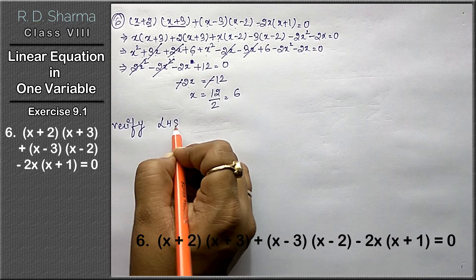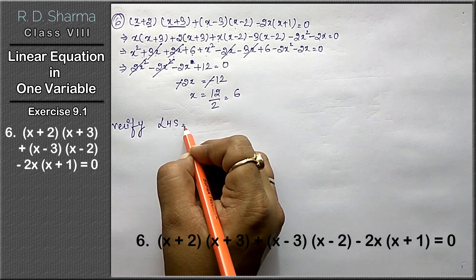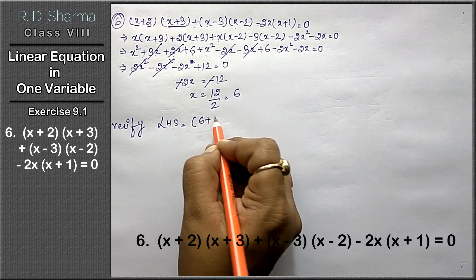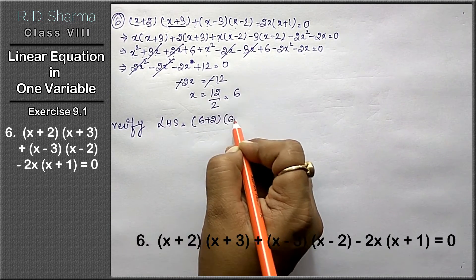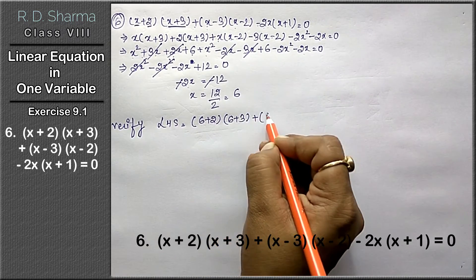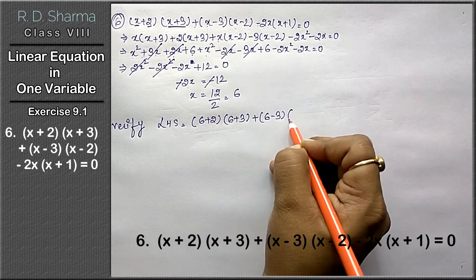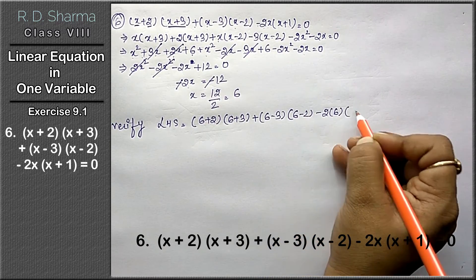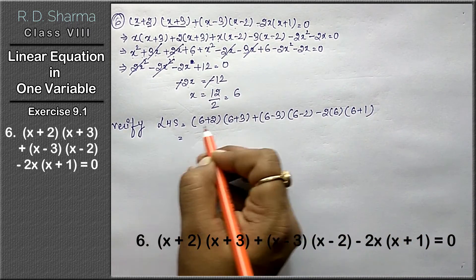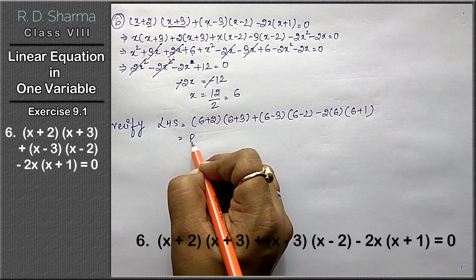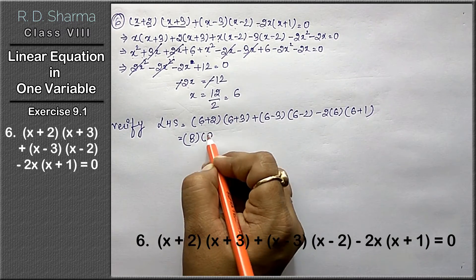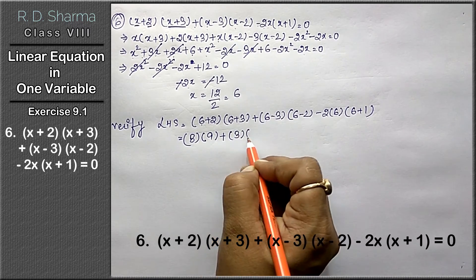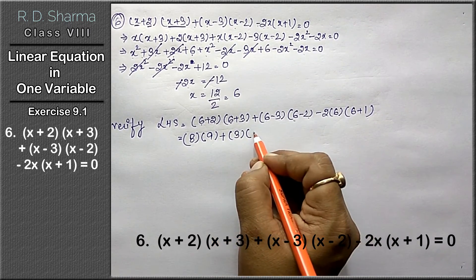On the left side, by putting the value of x: (6 + 2)(6 + 3) + (6 - 3)(6 - 2) - 2(6)(6 + 1). That is 6 plus 2 is 8, into 6 plus 3 is 9, plus 6 minus 3 is 3, 6 minus 2 is 4, minus 2 times 6 is 12, 6 plus 1 is 7.